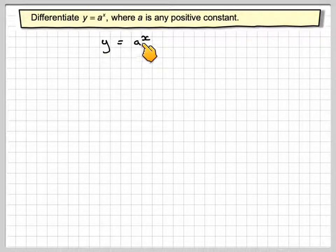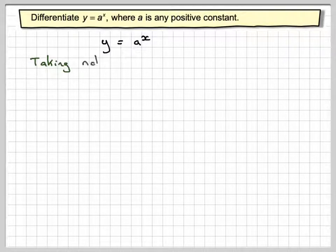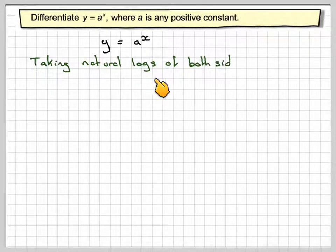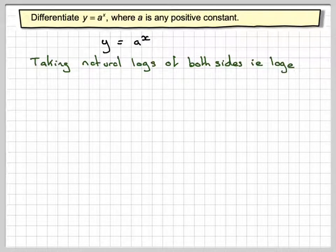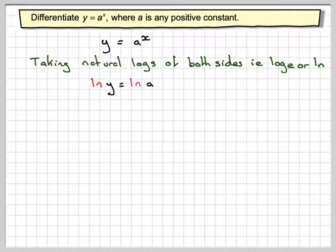So if we've got y equals a to the x, if we take logarithms of both sides, and we take natural logs of both sides, and remember natural log is log to the base e, or ln, then ln of y is equal to ln of a to the x.